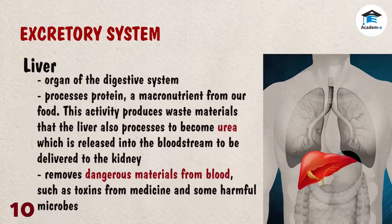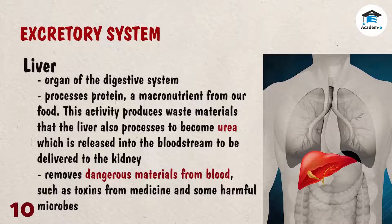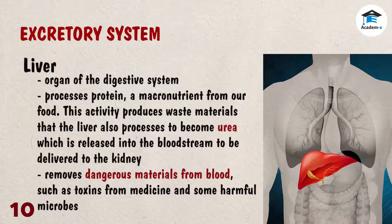The liver is an organ of the digestive system that processes protein, a macronutrient from our food. This activity produces waste materials that the liver also processes to become urea. The liver releases urea into the bloodstream to be delivered to the kidney. The liver also removes dangerous materials from blood, such as toxins from medicine and some harmful microbes, to keep the blood healthy and clean.